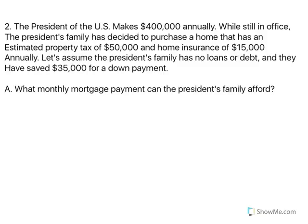The second problem: the President of the U.S. makes $400,000 annually. While still in office, the President's family has decided to purchase a home with an estimated property tax of $50,000 and home insurance of $15,000 annually. Assume the President's family has no loans or debt, and they've saved $35,000 for a down payment. What monthly mortgage payment can they afford? We figure this out based on our total expense ratio: 36% of gross monthly income.